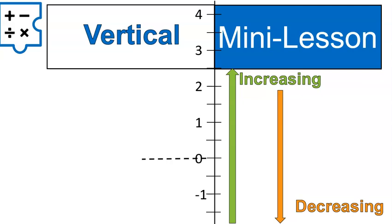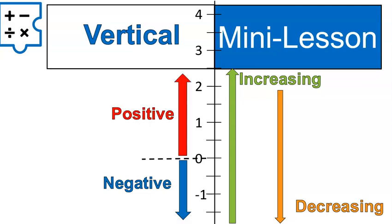That dotted line I have here, that is the origin at zero. Anything below zero is negative. Anything above zero is positive on a vertical number line. Now let's start talking about the points.